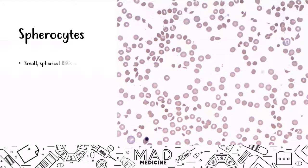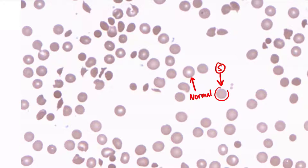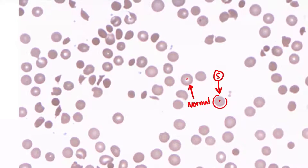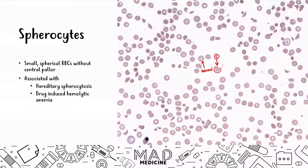Spherocytes are small spherical red blood cells without central pallor. The spherocyte is smaller than the normal red blood cell and has no central pallor, unlike a normal RBC. This is going to be associated with hereditary spherocytosis and drug-induced hemolytic anemias.